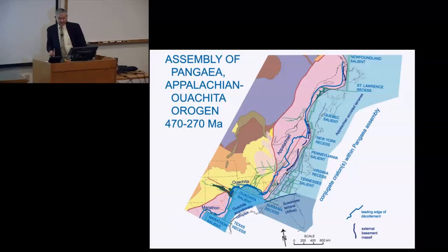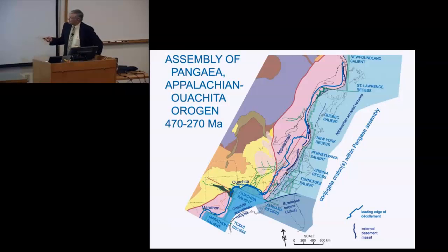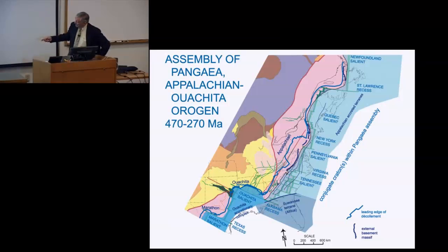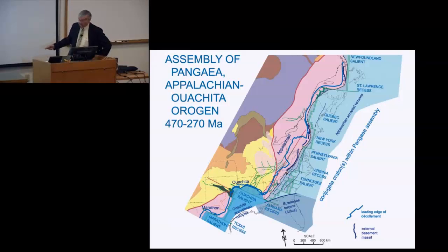Now we'll turn to the next step in the supercontinent cycle: the assembly of Pangaea. This is the set of processes that produced the Appalachian-Ouachita orogeny — the mountain belt. In present North America, we can trace that from Newfoundland down to central Alabama, where it goes under the Gulf Coastal Plain. Using drill data and seismic reflection recordings, we can trace it in the subsurface under the coastal plain to outcrops in the Ouachitas, then to the Marathon region of West Texas and into Mexico.